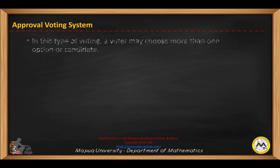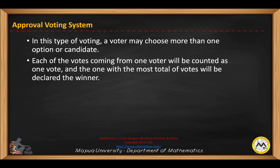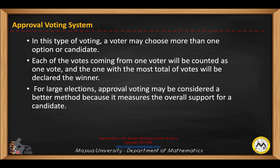Let's have the approval voting system. In this type of voting, a voter may choose more than one option or candidate. Each of the votes coming from one voter will be counted as one vote, and the one with the most total votes will be declared the winner. For large elections, approval voting may be considered a better method because it measures the overall support for a particular candidate.